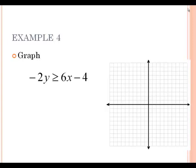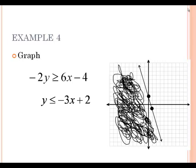On example 4, before we're ready to graph this line, we have to first divide by negative 2. When you divide by a negative, you flip your inequality sign. So y is now less than or equal to negative 3x plus 2. Start your y-intercept at positive 2, put a dot there. Slope is negative 3, so go down 3 places and to the right 1. As you draw this line, it's going to be a solid line because of the equals underneath the less than. And you're shading everything below the line.